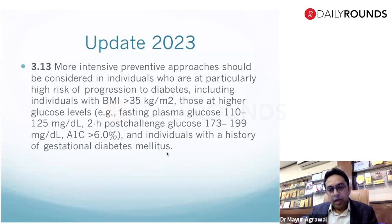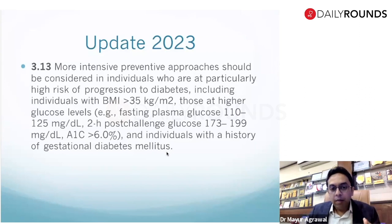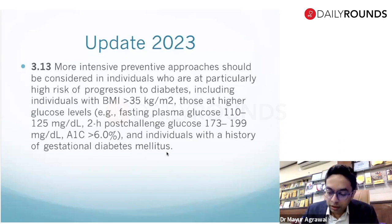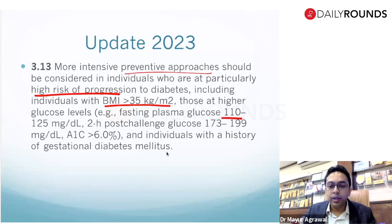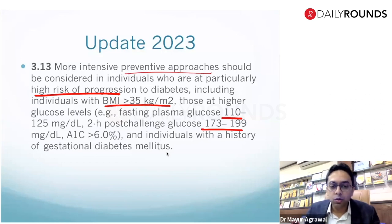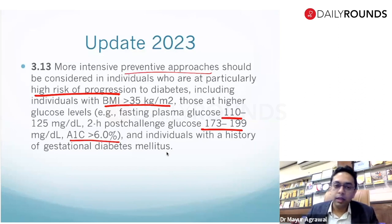A 2023 update taken from the IRIS trial (Insulin Resistance Intervention after Stroke): patients with prior stroke, insulin resistance features such as acanthosis nigricans, and pre-diabetes — pioglitazone may be considered to lower the risk of stroke or TIA. Weight gain and edema can be minimized by using a lower dose. Additionally, more intensive preventive approaches should be considered for high-risk patients: BMI more than 35, fasting glucose 110–125, two-hour post-challenge glucose 173–199, HbA1c more than 6%, or prior GDM history.